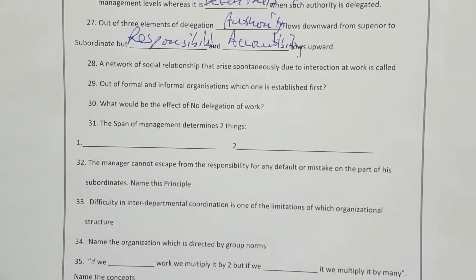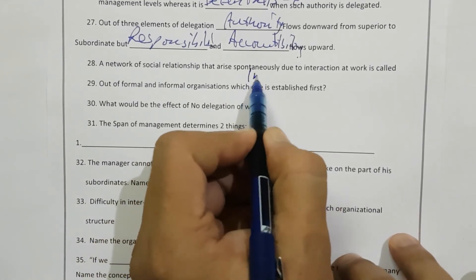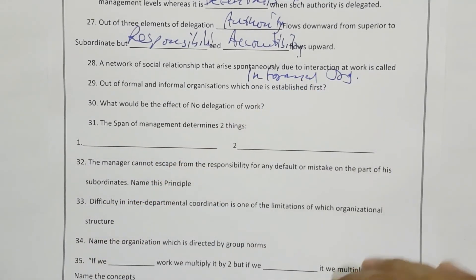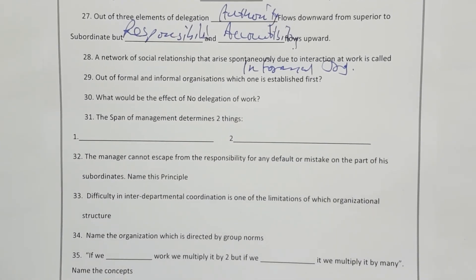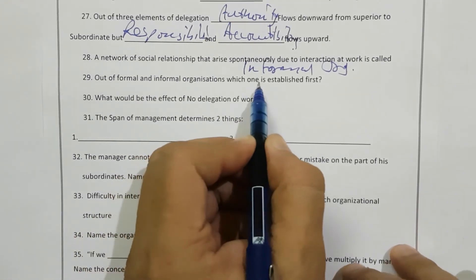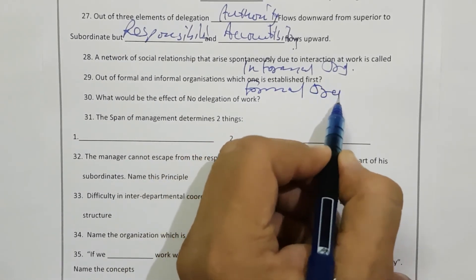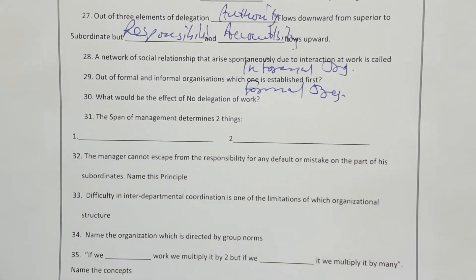A network of social relationships that arise spontaneously due to interaction at work is called informal organization. Next, out of formal and informal organization, which one is established first? Obviously formal organization comes first, and from within the formal organization, informal organization is developed.